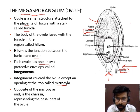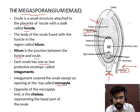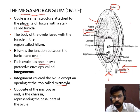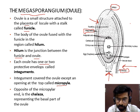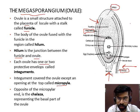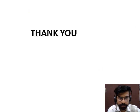Opposite to the micropyle there is an end known as the chalazal end. So the ovule contains two ends: one is the micropyle end and the second is the chalazal end. The micropyle end does not have a covering of integuments, and the chalazal end is present opposite to the micropyle end. Thanks.